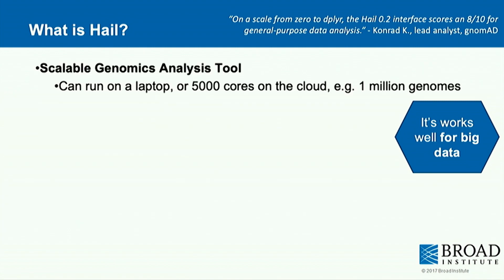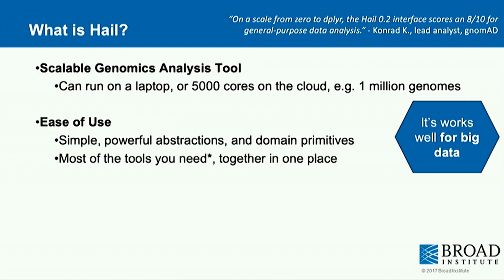Hail is a scalable genomics tool. It can run on a laptop, but its power really shows on the cloud. On a cloud-based platform like AWS or Google Cloud, you could in concept scale up to a million genomes — which is exactly what Conrad on the gnomAD team is working towards.